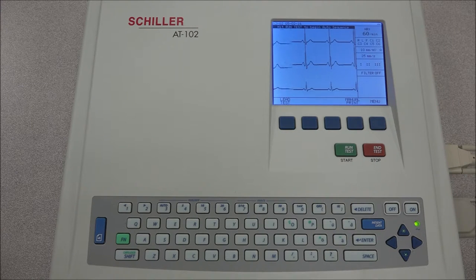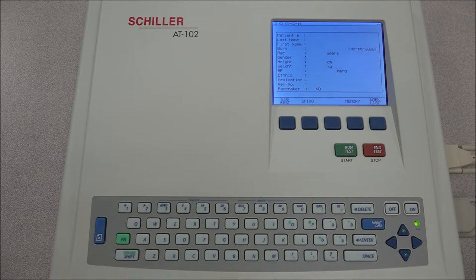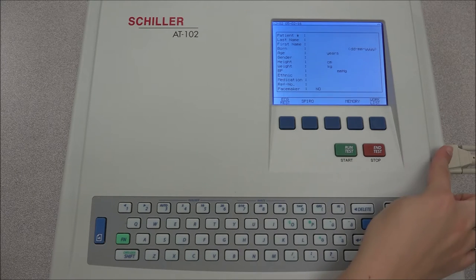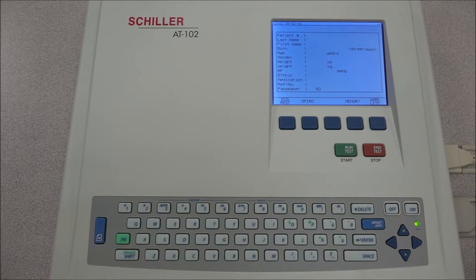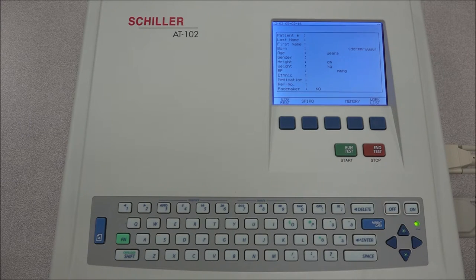You can then select what task you would like to perform using the soft keys. Keep in mind that the spiral option is only displayed when the spiral sensor is connected. The ECG stress and workless soft key options are only displayed when these options are installed.